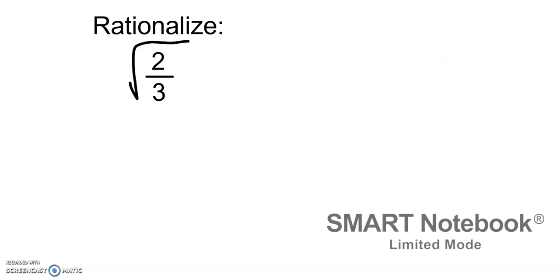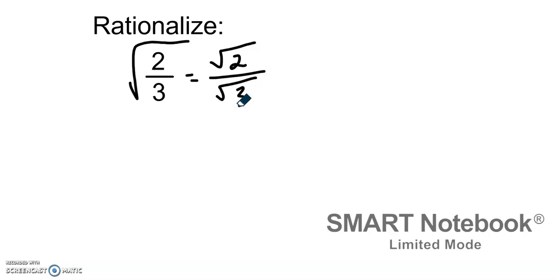The first example: the directions say rationalize. We have the square root of 2 over 3. You might think it's done since 3 is in the denominator, but remember our radical rules — we can break it up into the square root of 2 over the square root of 3, and we currently have that radical in our denominator. So we need to rationalize it. With a monomial, we multiply both the numerator and the denominator by that radical.